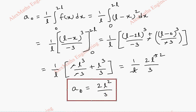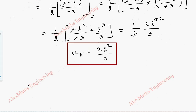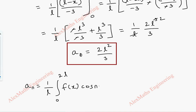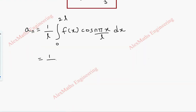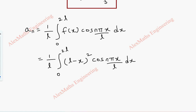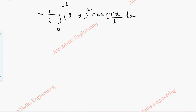Now coming to a_n. The formula is a_n = (1/L) integral from 0 to 2L of f(x) cos(nπx/L) dx. For f(x) it is (L − x)², so we have (1/L) integral from 0 to 2L of (L − x)² cos(nπx/L) dx. Now we are going to use Bernoulli's integral formula.